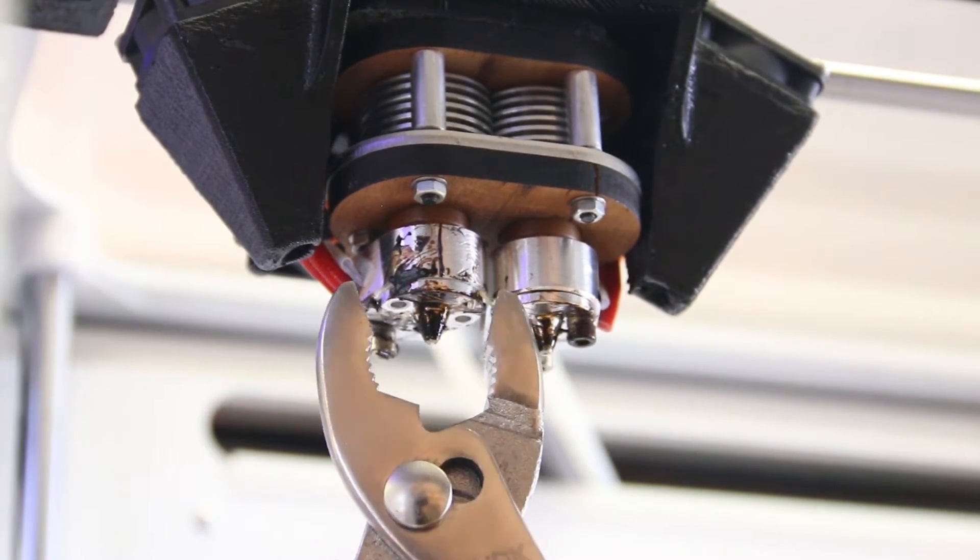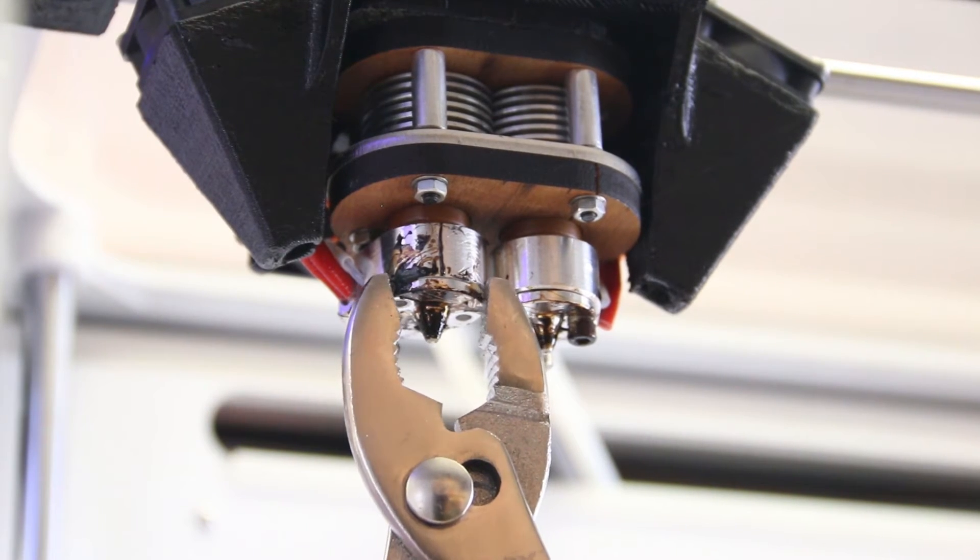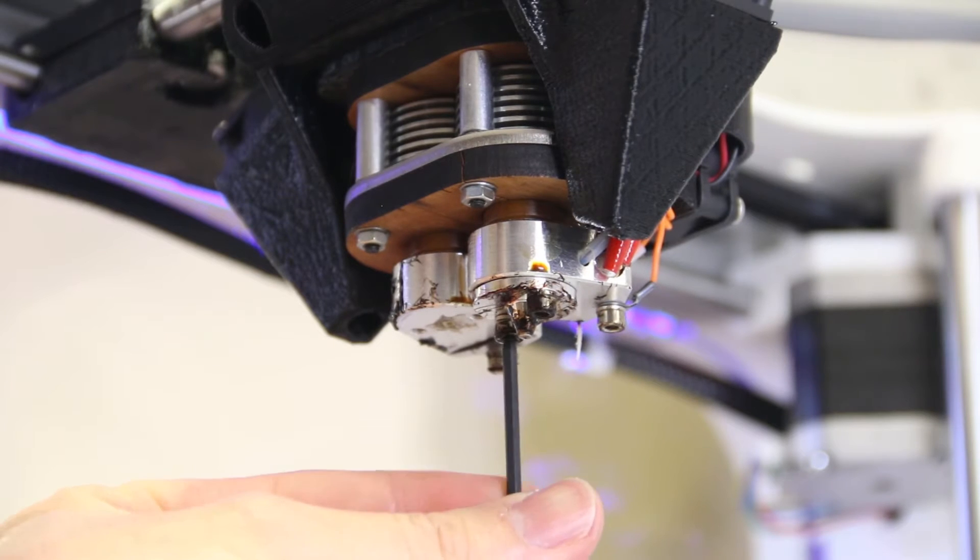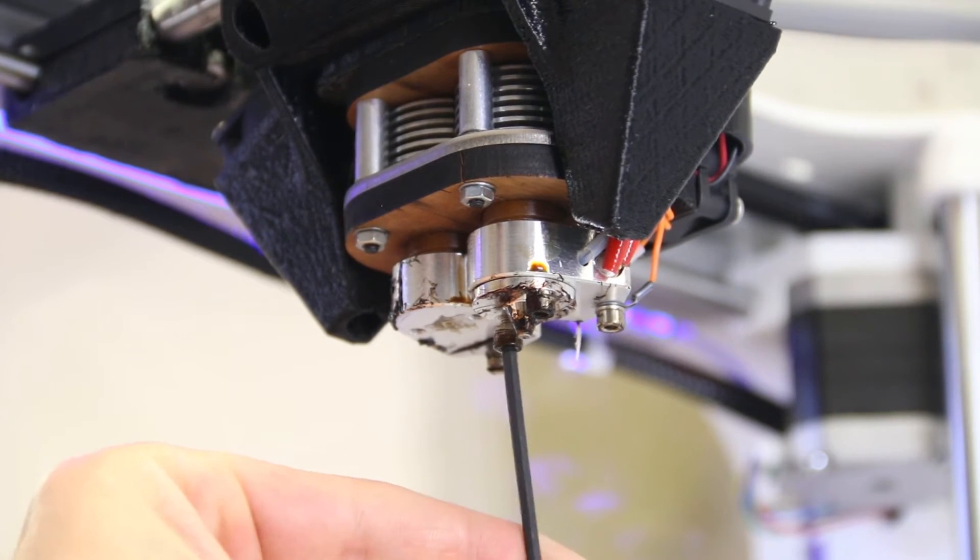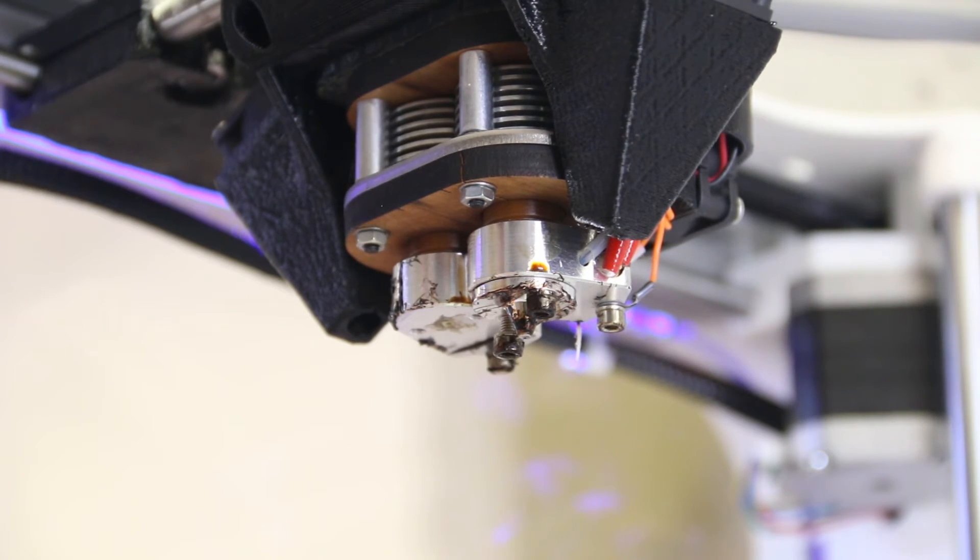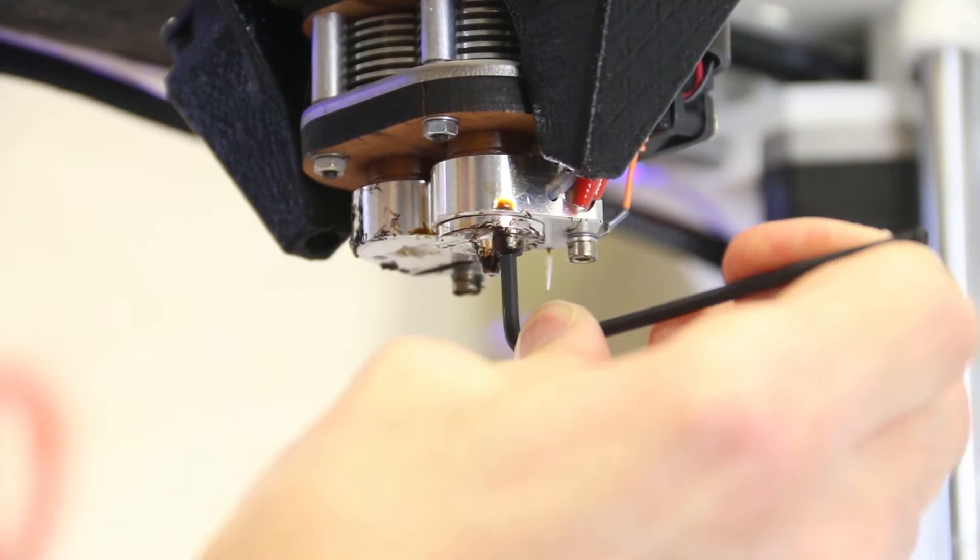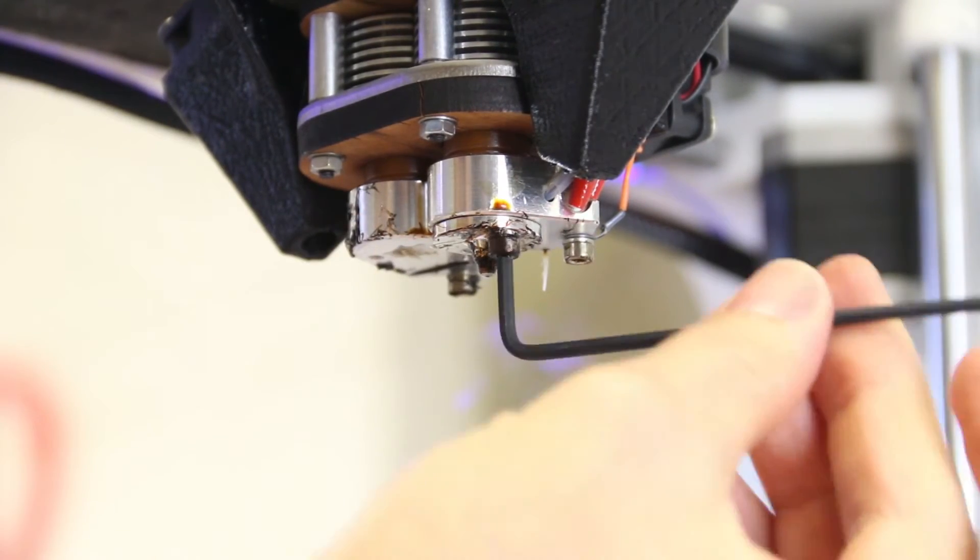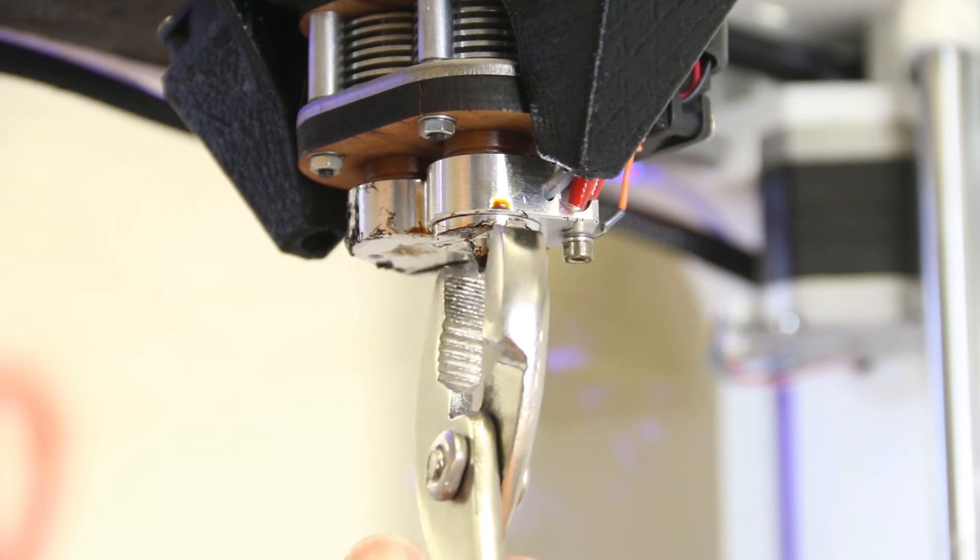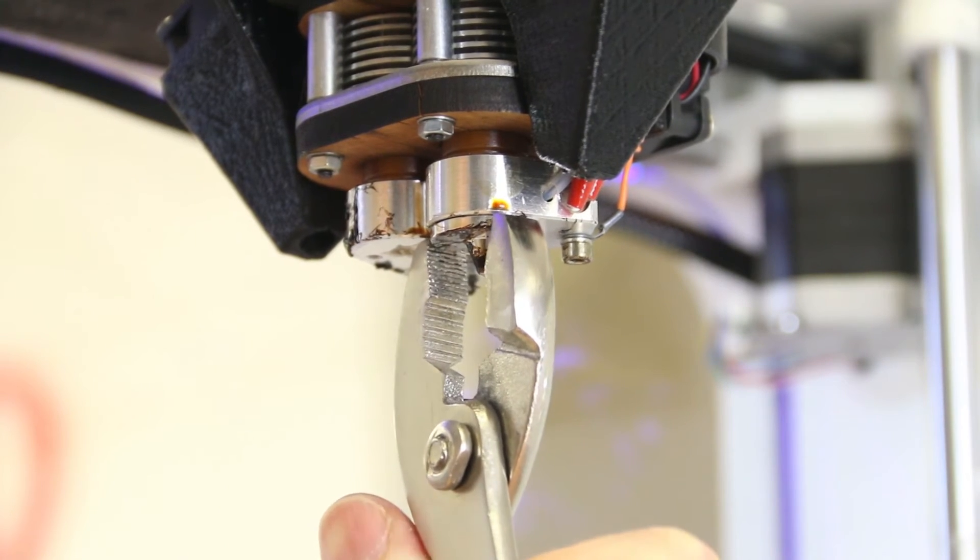Use a pair of pliers to remove the nozzle. Be careful because the nozzle will be hot. Make sure the heating block does not turn when tightening the nozzle screws. Be aware of the wires on the back of the heating block and do not short these wires. On the Axiom Dual, remove both nozzles.